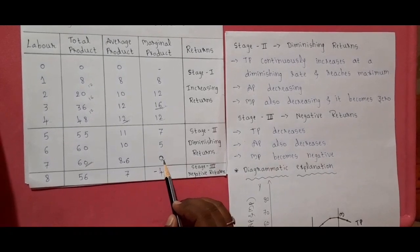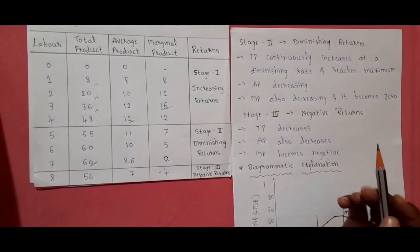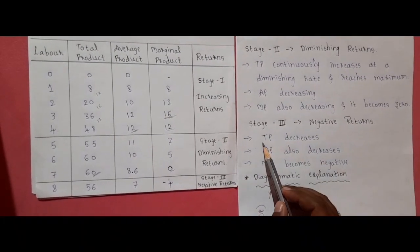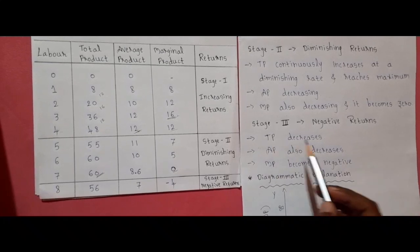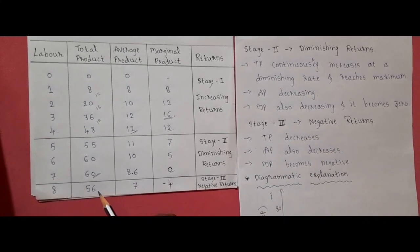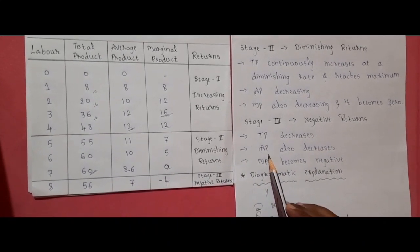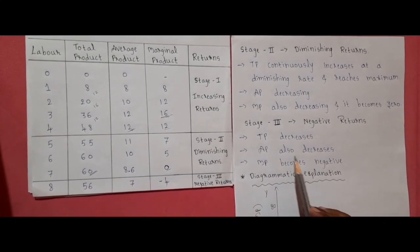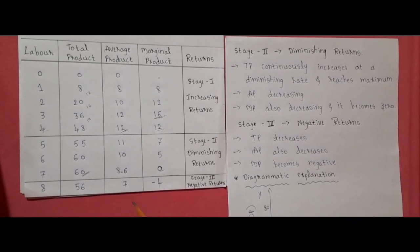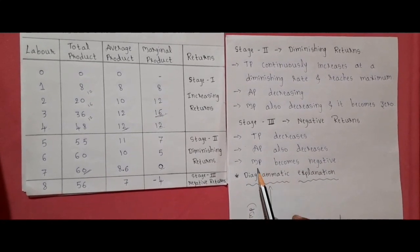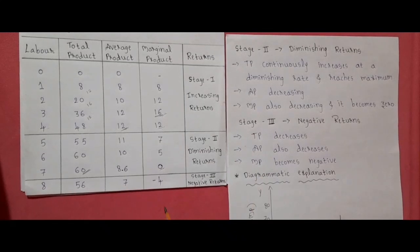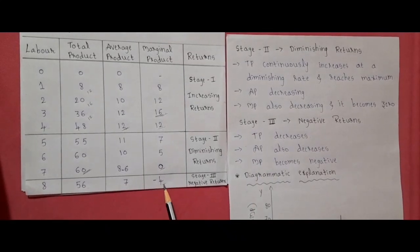In stage 3, negative returns: total product decreases, average product also decreases, and marginal product becomes negative.